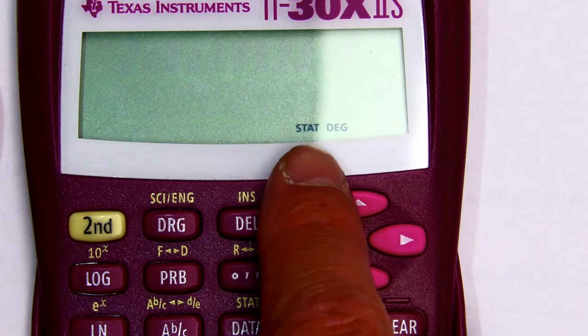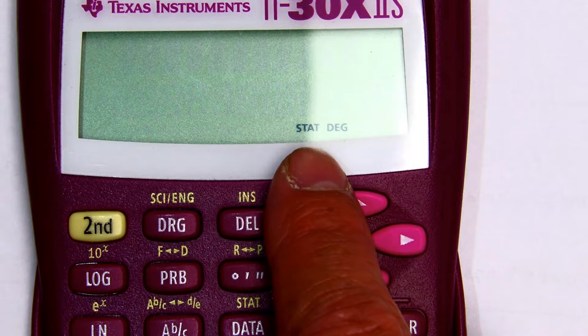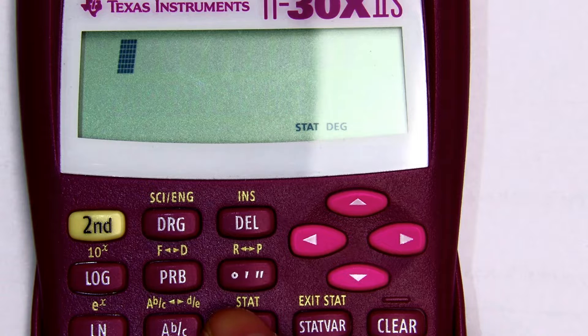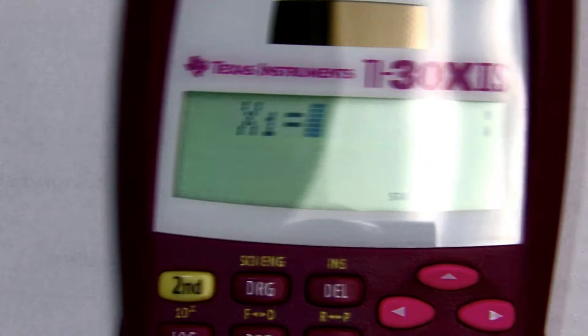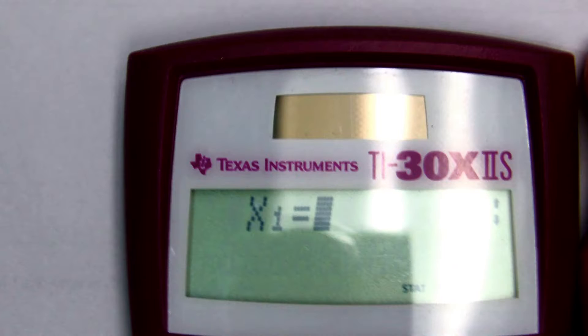And what that will do is you'll see the word stat now. And then for data, we're going to put in X1, which is the first number in my list, which is my kids' ages.